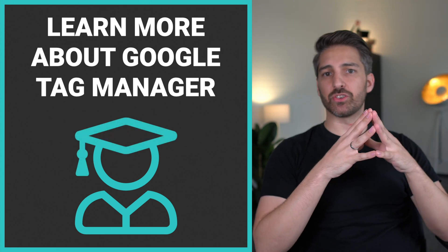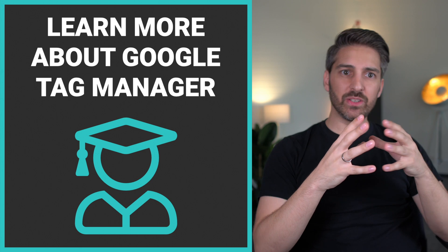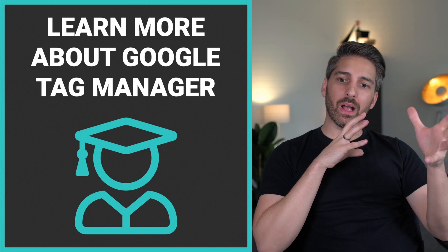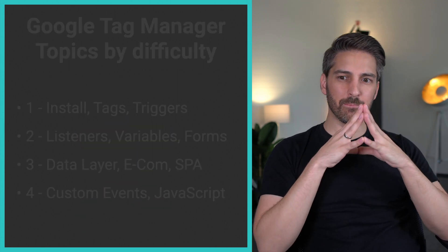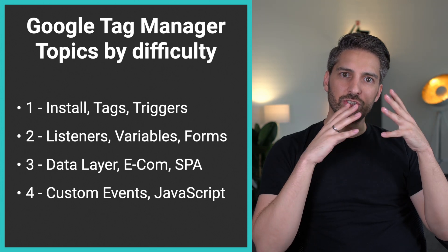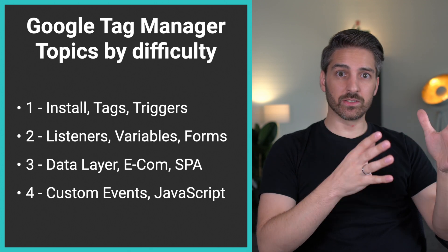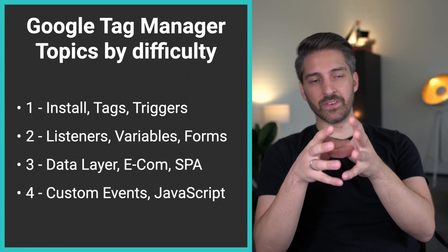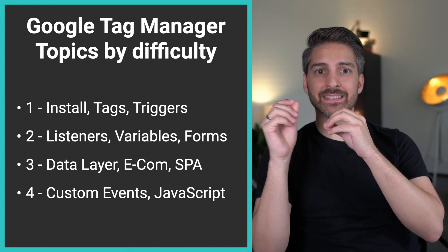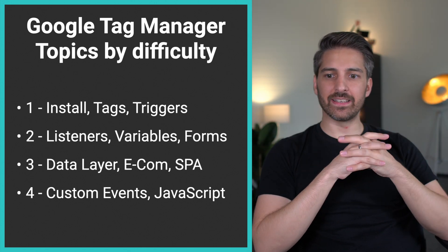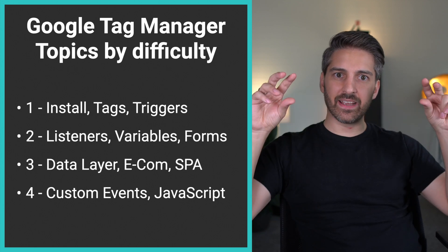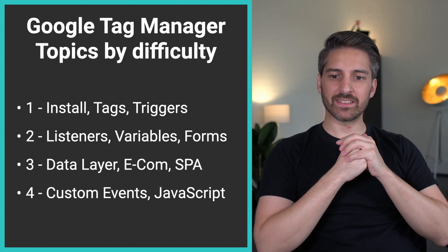If you want to learn more about Google Tag Manager — maybe you've started your journey and found it complicated, or you're already intermediate and want to reach expert status — there are four basic levels. At the beginning, you should focus on properly installing Google Tag Manager, how to configure and create tags, and how to set up basic triggers: page views, clicks, scroll events, timers — things that are not so difficult to configure.